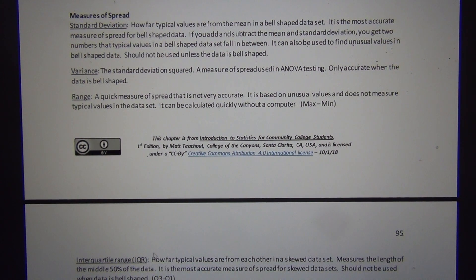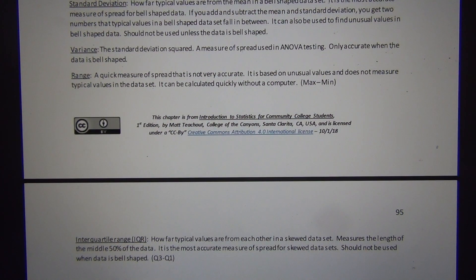Now we did the interquartile range. So interquartile range is down here at the bottom. We found that this was the most accurate measure of spread for non-normal data.